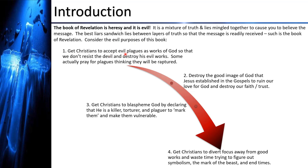Purpose number one: the book of Revelation is designed to get Christians to accept evil plagues as works of God, so that they don't resist the devil and make him flee, and don't destroy his evil works. Some people actually pray for plagues because they think the end is here and they want Jesus to come. They think, 'Let the evil get what's due to them, let the plagues come.' The devil has tricked them into believing plagues are from God.